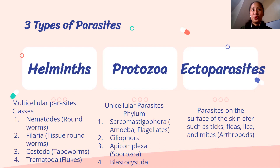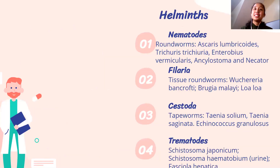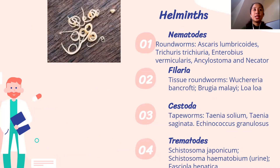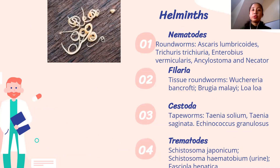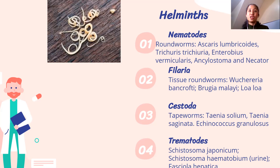Ectoparasites are arthropods. Under nematodes are roundworms — examples include Ascaris, which you can see with the naked eye, Trichuris trichura, and Enterobius vermicularis. The other names for Enterobius vermicularis are seatworm and pinworm.